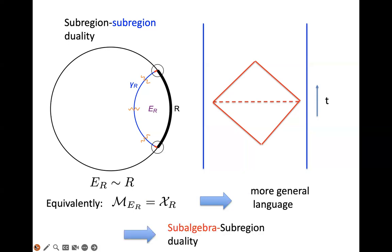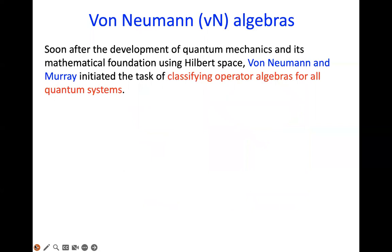We need to use subalgebra-subregion duality to describe this kind of region. Let me say a few words regarding von Neumann algebras. Soon after the development of quantum mechanics and its mathematical foundation using Hilbert spaces, von Neumann and Murray initiated the task of classifying operator algebras for all quantum systems. This is very natural from a mathematician's point of view because physical observables are important, so we should classify them.